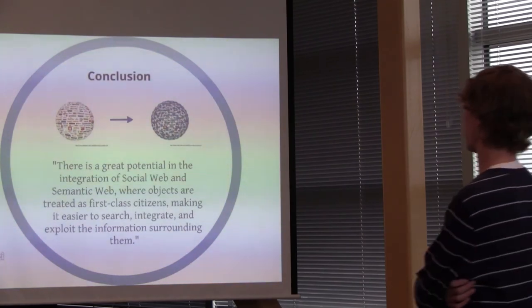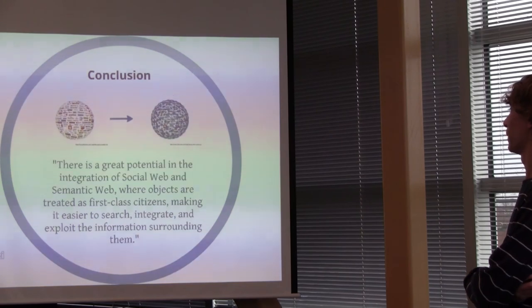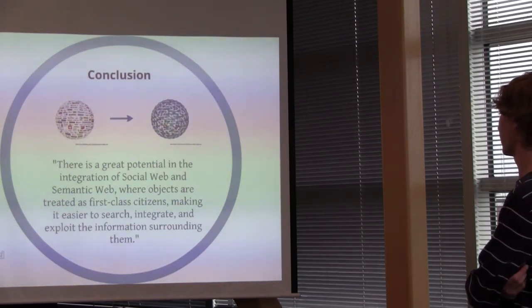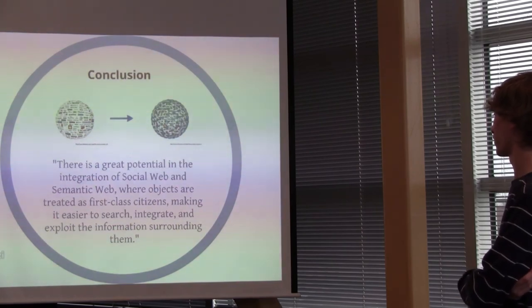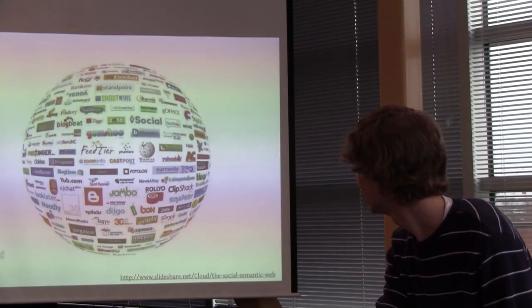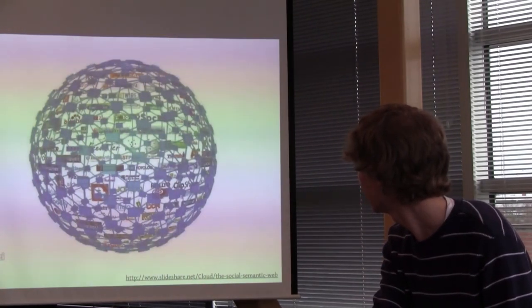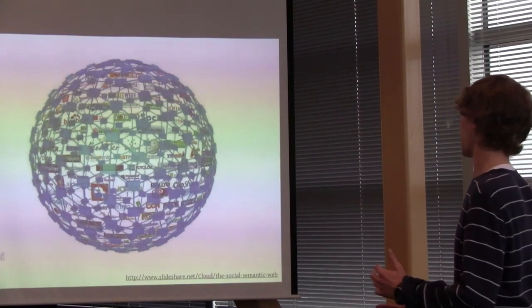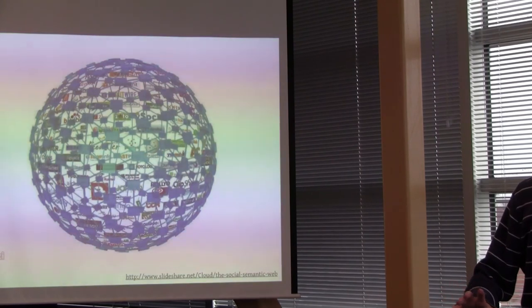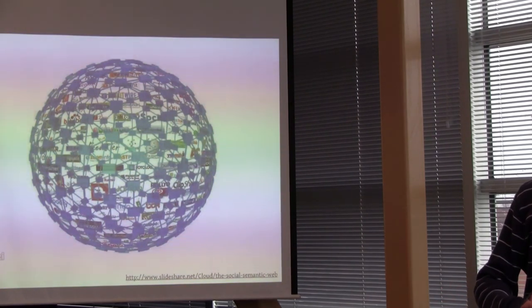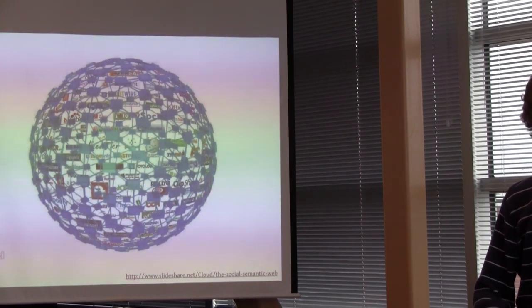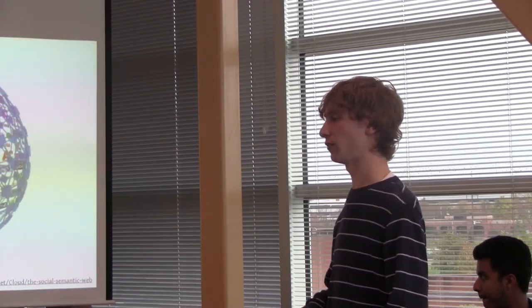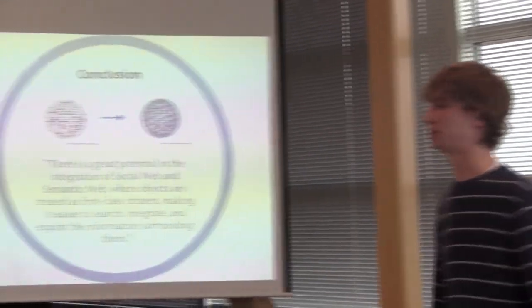With Twitris we capture semantics along the spatial-temporal-thematic direction, user intentions, sentiments towards specific events, and networking behavior. Here's the architecture of Twitris — the search and explore tab. Using background knowledge, the system is able to answer complex queries. You have a tweet, the entity spotter extracts entities via DBpedia — person, place, or thing — converts each entity into RDF triples, and then using background knowledge and SPARQL queries, gets information about those entities. Conclusion: there's great potential in the integration of social web and semantic web, where objects are treated as first-class citizens, making it easier to search, integrate, and exploit the information surrounding them.